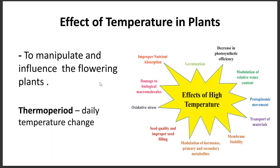These are the effects of temperature on plants. The main one is to manipulate and influence the flowering of plants, alongside the term thermoperiod, which means a daily temperature change. Some effects of high temperature on plants include: changes in germination, decrease in photosynthetic efficiency, modulation of relative water content, protoplasmic movement, transport of materials, membrane stability, modulation of hormones, primary and secondary metabolites, seed quality, improper seed filling, oxidative stress, damage to biological macromolecules, and improper nutrient absorption.